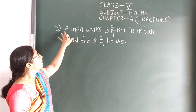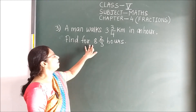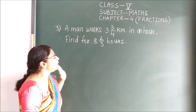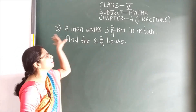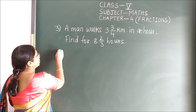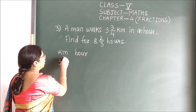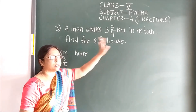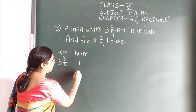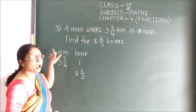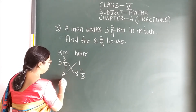In the third word problem, a man walks 3 and 3/4 kilometers in an hour. We need to find how far he walks in 2/3 of an hour. We use the unitary method. The two things given are kilometers and hours. Under the km column: for 1 hour he walks 3 and 3/4 km; find for 2/3 hour, writing unknown as 'a'. Then cross multiply.